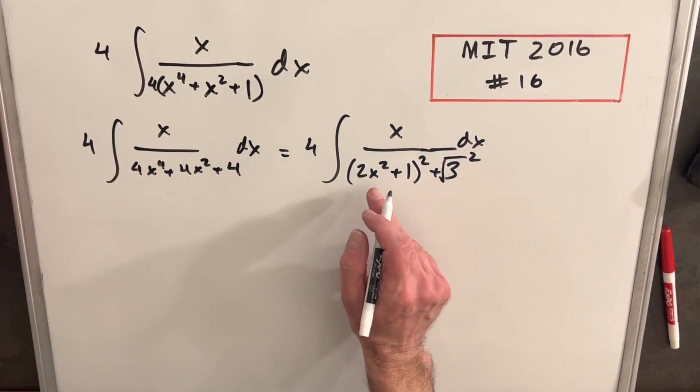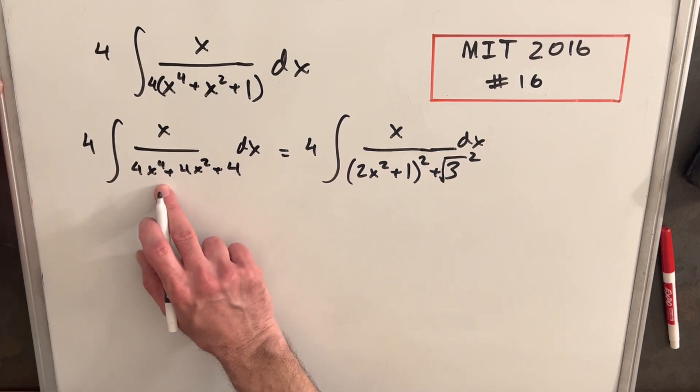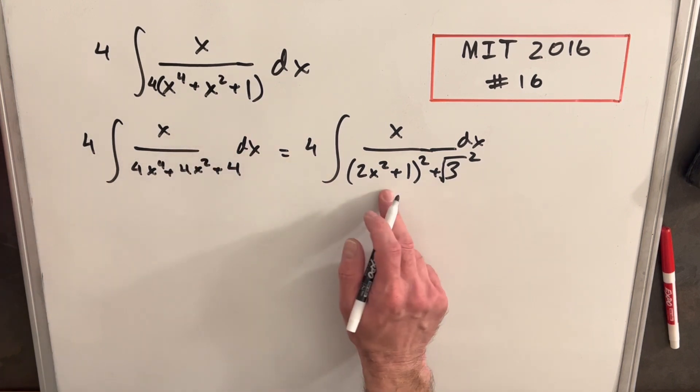And then we'll do a u substitution. Noticing now we're in good shape. Here we had a 4th power, so we couldn't really do a u substitution. But now with a square power, this is going to work out okay.